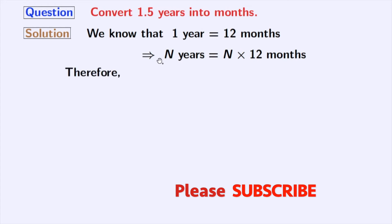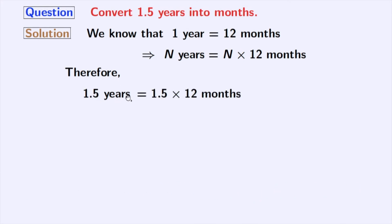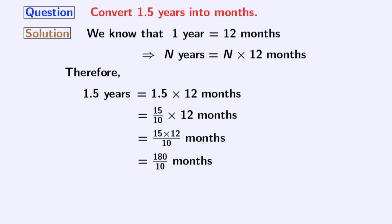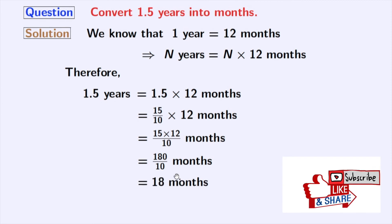Therefore, using this fact, 1.5 years will be equal to 1.5 times 12 months. Now, we will express 1.5 as a fraction. Doing that, we get 15/10 times 12 months. Simplifying this, we get 15 times 12 by 10 months. After multiplication, we get 180 by 10 months. Again, after simplification, we will get 18 months.